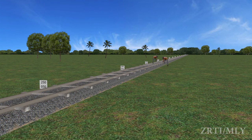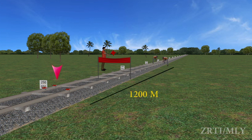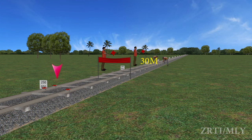When the train is required to stop and the restriction is likely to last only for a day or less: a banner flag at 600 meters, three detonators 10 meters apart at 1200 meters from the obstruction, and a stop hand signal at 30 meters from the work spot and 45 meters from the last detonator.